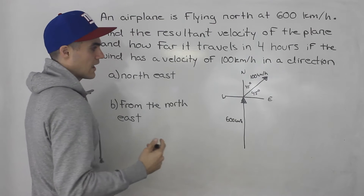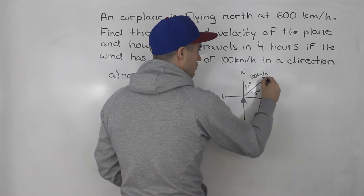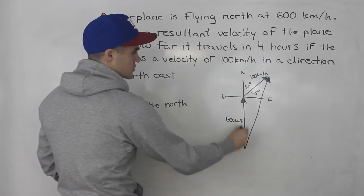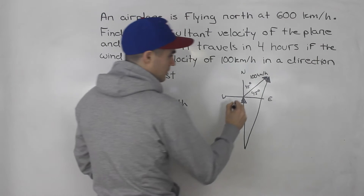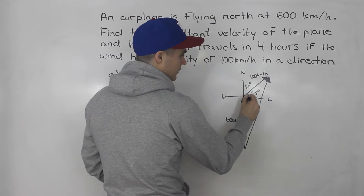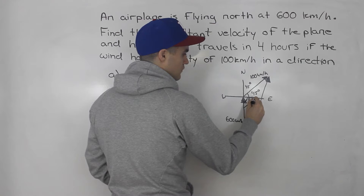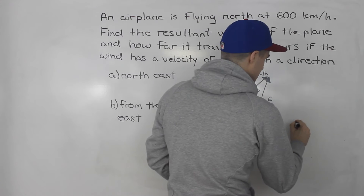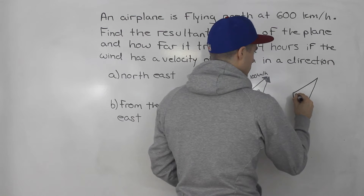We can create a resultant velocity vector from here all the way to here. We have a triangle — it's a non-right angle triangle. We can figure out what this angle is: from here to here is 90 degrees, and then this is 45, so the total angle is going to be 135 degrees. Drawing the triangle on the side so you can see it better: this is 135 degrees.